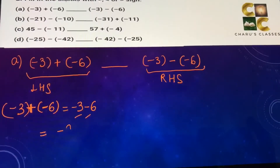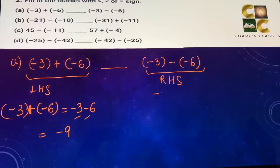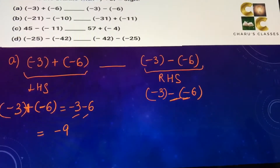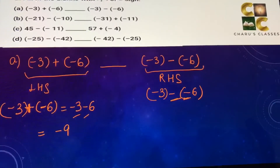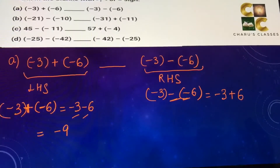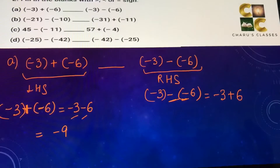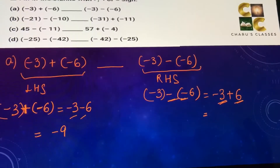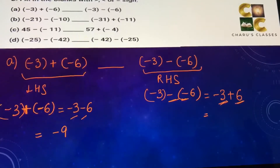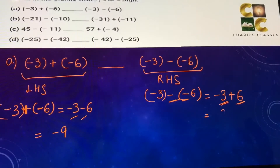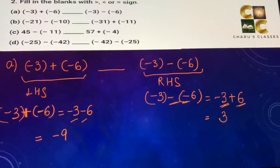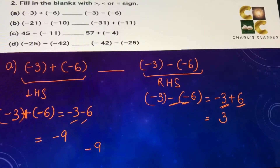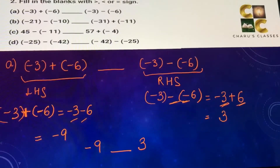If both numbers are negative they get added with the negative sign, so this equals minus 9. On the right hand side we have minus 3 minus minus 6. Whenever there is a minus sign before the bracket and inside also there is a minus sign, minus minus becomes plus. So this becomes minus 3 plus 6, which gives us 3. So we are comparing minus 9 and 3 — minus 9 is less than 3.